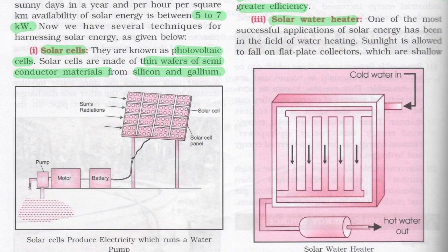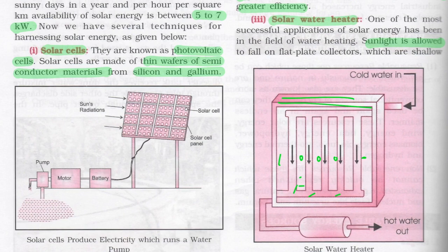The solar water heater is one of the most successful applications of solar energy, used in many households today. Sunlight falls on flat plate collectors — shallow rectangular trays filled with water — properly inclined for maximum heat collection. The box is insulated and painted black so heat does not escape easily. A copper coil through which cold water flows gets heated by the stored heat, and the heated water flows out through an outlet.